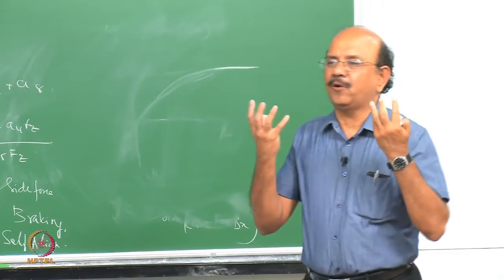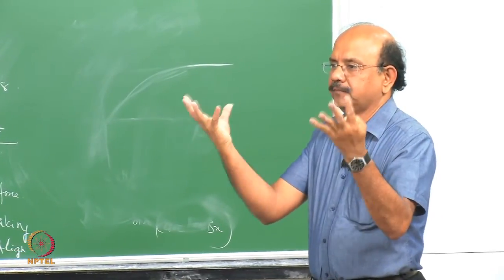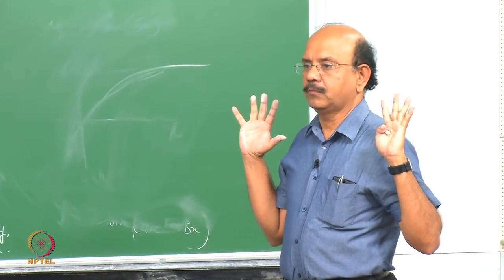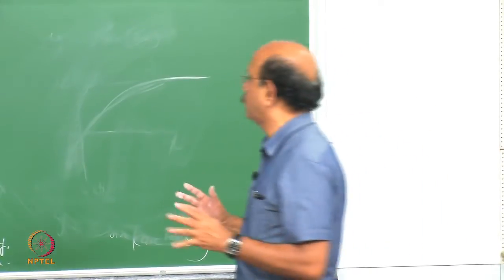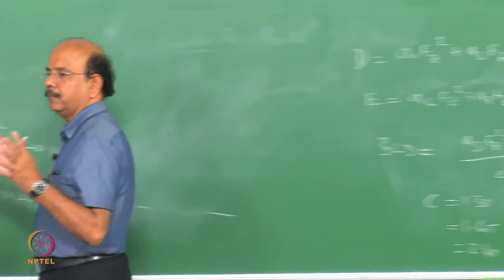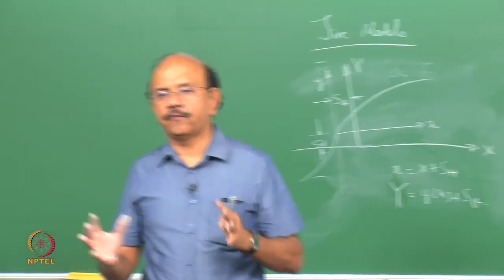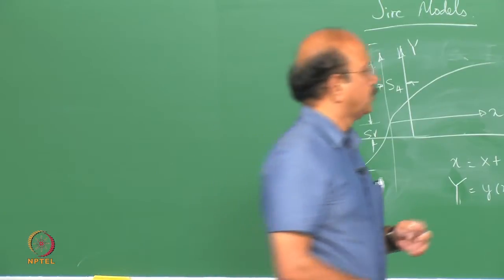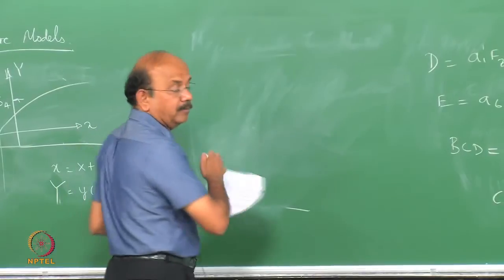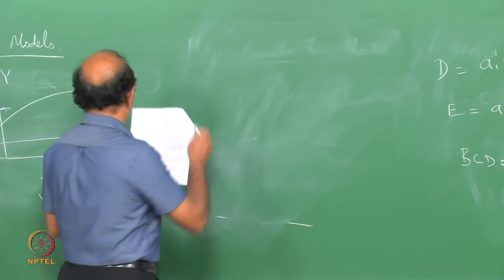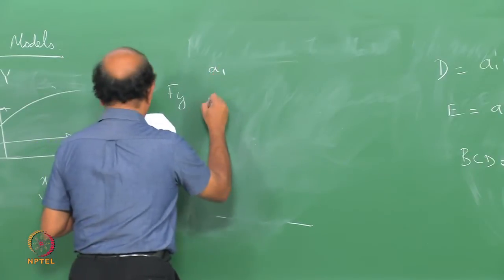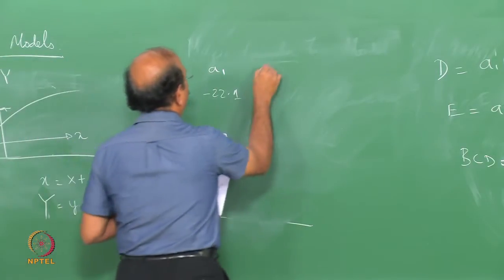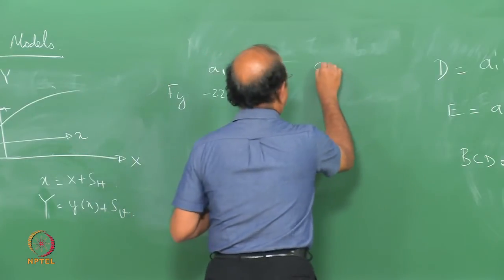What I have essentially done is shifted the onus of this curve from B, C, D and so on to a1, a2, a3, a4, a5, a6, a7, a8 and so on. In other words, I now have a set of parameters a1 to a8 which capture these curves. For example, for Fy: a1 would be minus 22.1 — note that it is not necessarily positive — and a2 will be 1011. This is in terms of kilo Newtons. Many people in the tire industry use pound force, so these coefficients would be accordingly adjusted.